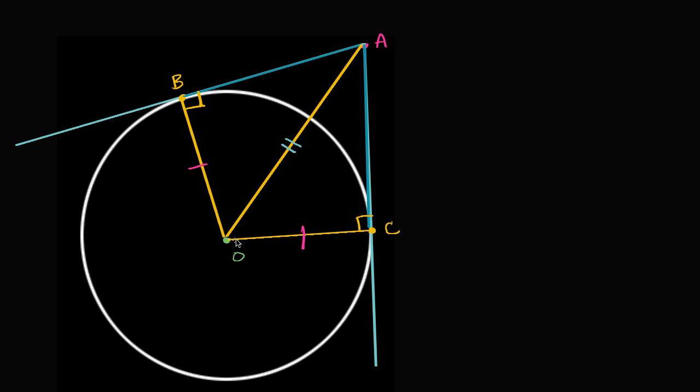And so we see triangle ABO and triangle ACO, they're both right triangles that have two sides in common. In particular, they both have a hypotenuse that are equal to each other, and they both have a leg. And we know from hypotenuse-leg congruence, that if you have two right triangles where the hypotenuses are equal and you have a leg that are equal, then the two triangles are going to be congruent. So triangle ABO is congruent to triangle ACO.